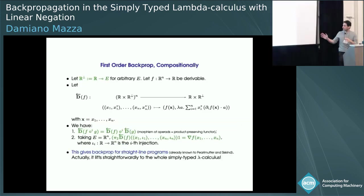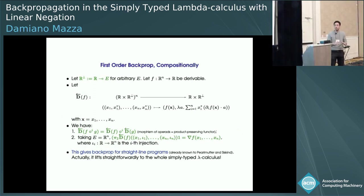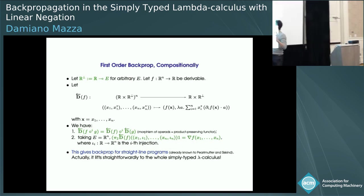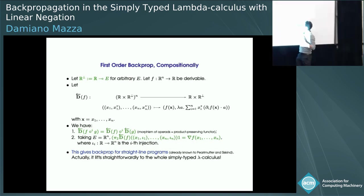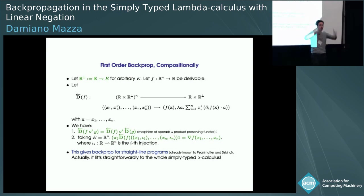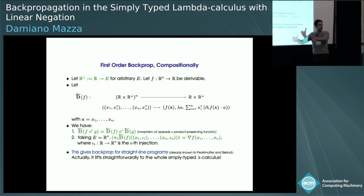By instantiating the backpropagators with injections and doing some projections, you get the gradient. This gives backpropagation for straight-line programs. Notice something very important: in order to do it compositionally, you need to introduce higher order — there are applications and lambdas even though the source code is just a straight-line program. So when you apply this transformation, even starting with a first-order program, it already gives you a lambda term.